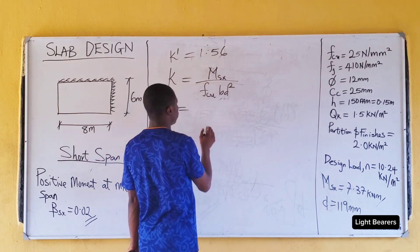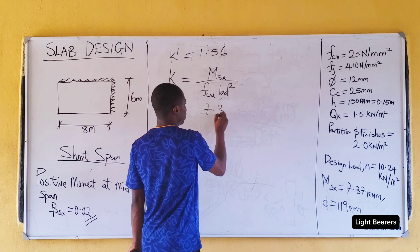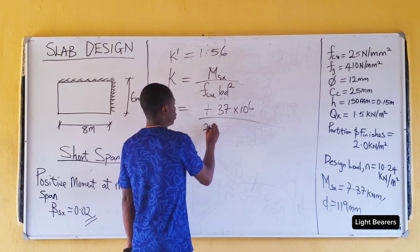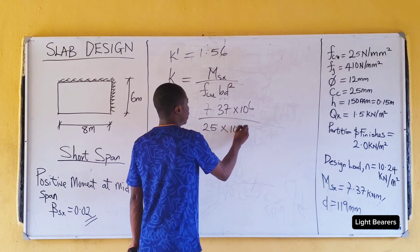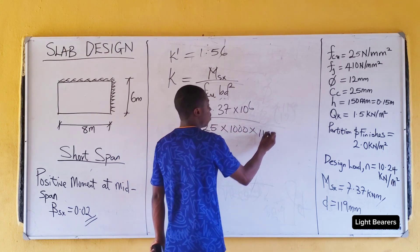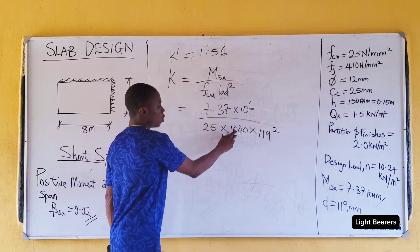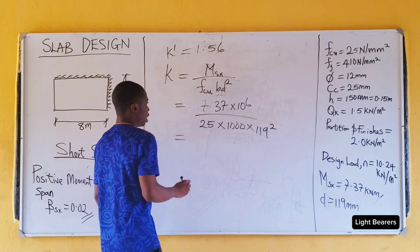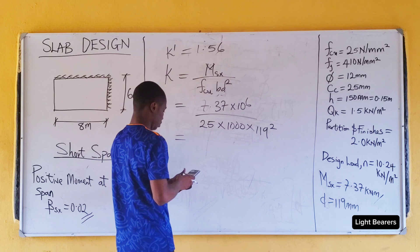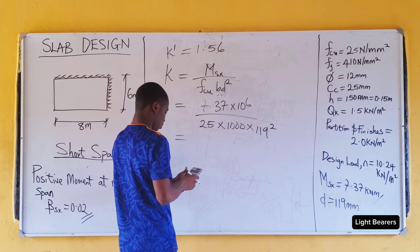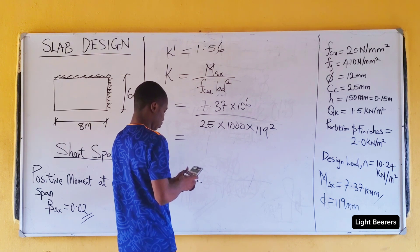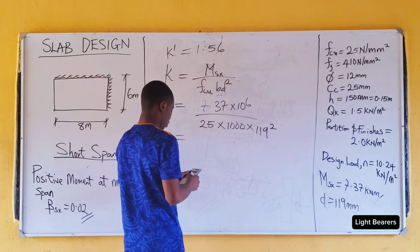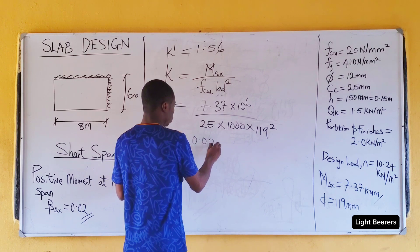Now let's substitute into the equation. We have 7.37 multiplied by 10 to the power of 6, all over 25 multiplied by 1000 multiplied by 119 squared. B is 1000 because we design per square meter. This gives us k equals 0.02.